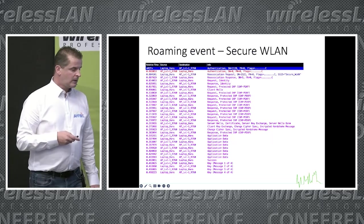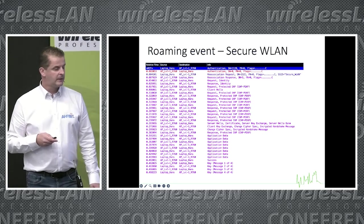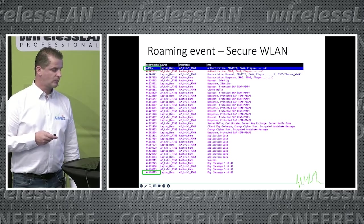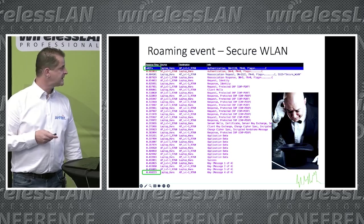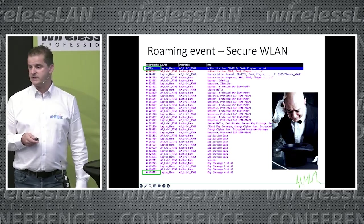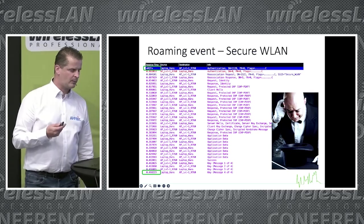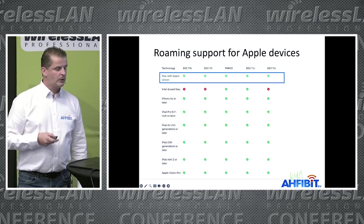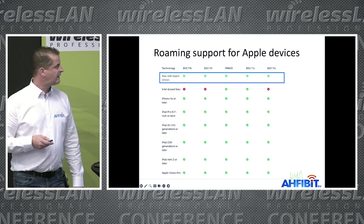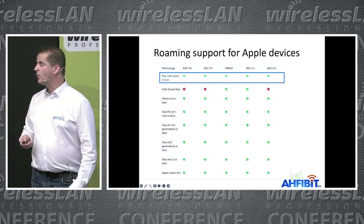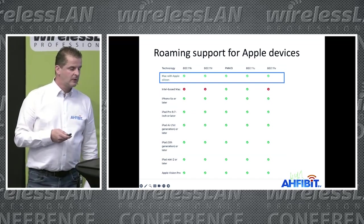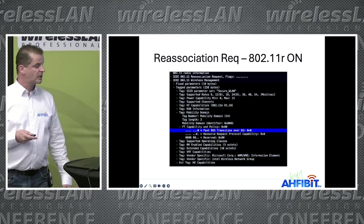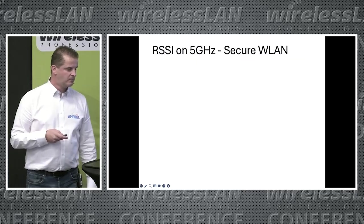When I enabled 11r, I immediately saw a four-way handshake — something went wrong. The total time was 468 milliseconds, still above my 150ms target. I was using my MacBook with Apple Silicon, which should support 11r. To verify, I checked the packets — the reassociation request did include 11r — so the client was attempting it correctly.